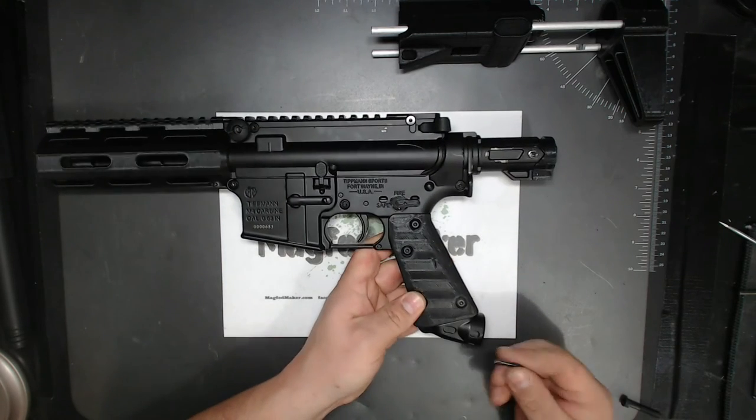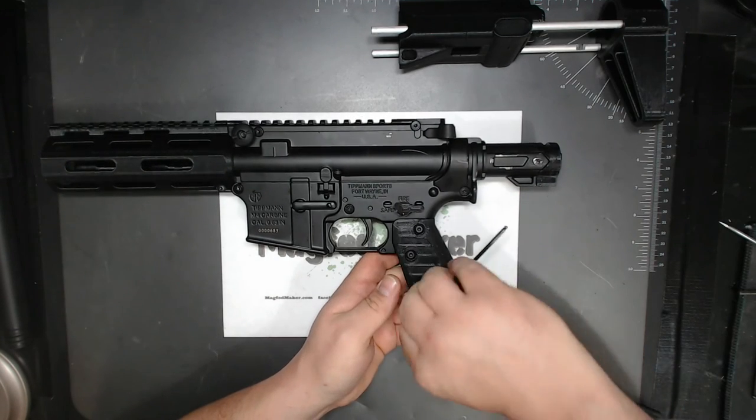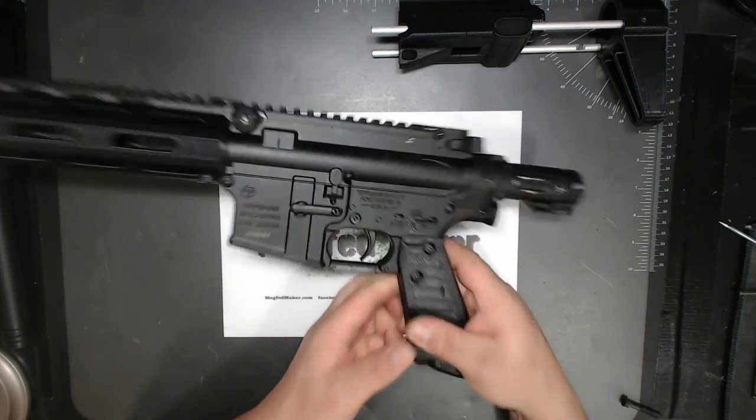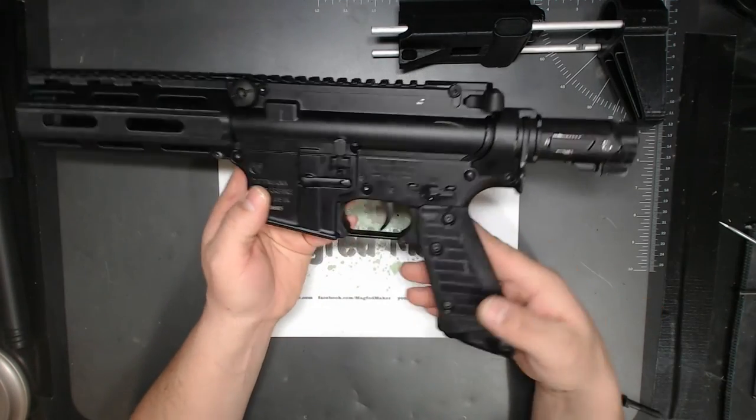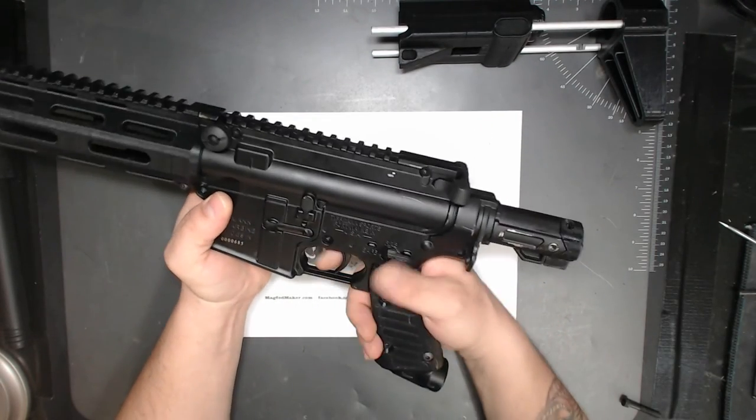The ones you really want to pay attention to are these bottom two right here. Make sure they are nice and tight because that is what's securing your ASA. And boom. New pistol grip. No over-molded, rubberized, weird looking stuff.